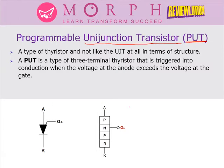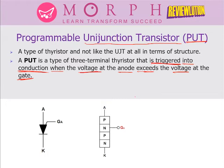The programmable UJT is a type of thyristor, not like the UJT in terms of construction. A PUT is a three-terminal thyristor that is triggered into conduction when the anode-to-cathode voltage exceeds the voltage at the gate. This is different from the SER, where you use the gate signal to trigger turn-on. In the PUT, a fixed bias voltage is set at the gate; as long as the anode-to-cathode voltage does not exceed that gate bias, the PUT remains off. Once the anode-to-cathode voltage goes beyond that bias, the PUT turns on.